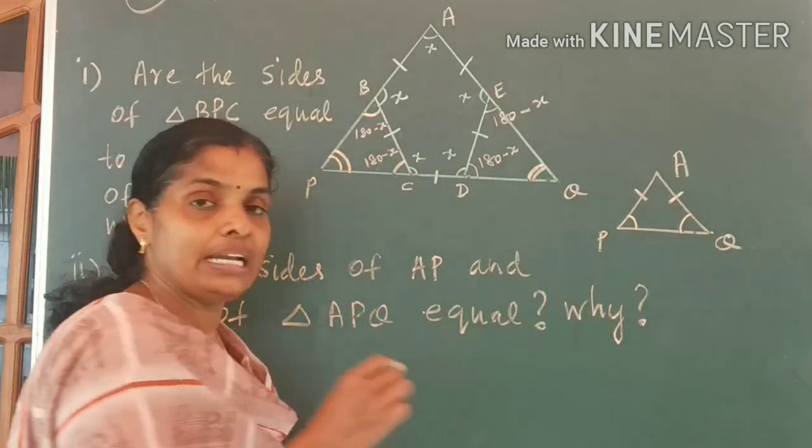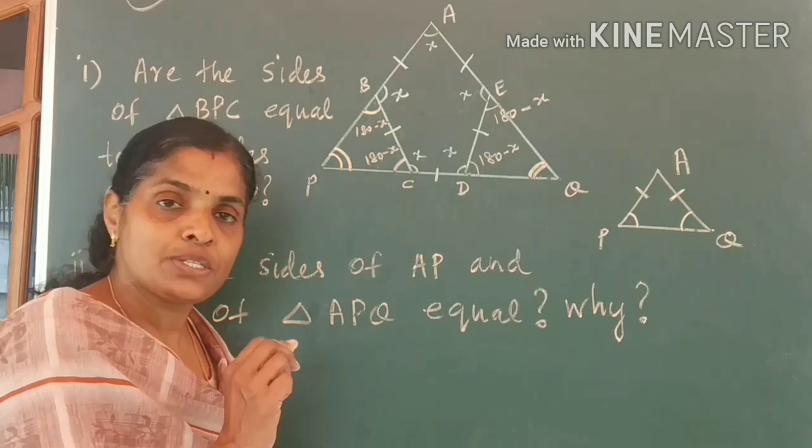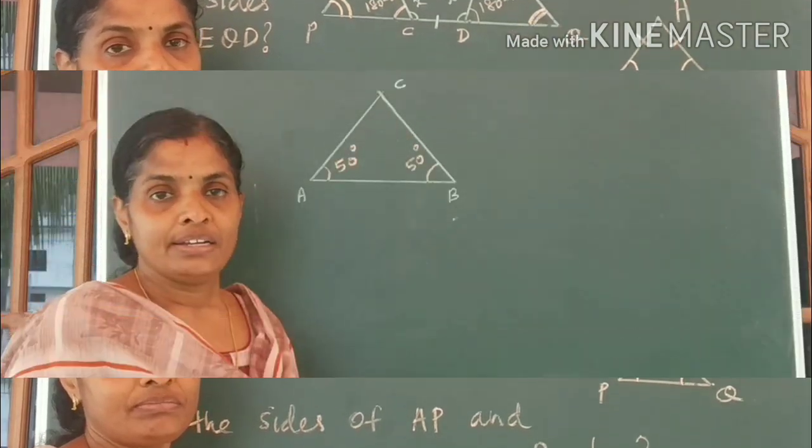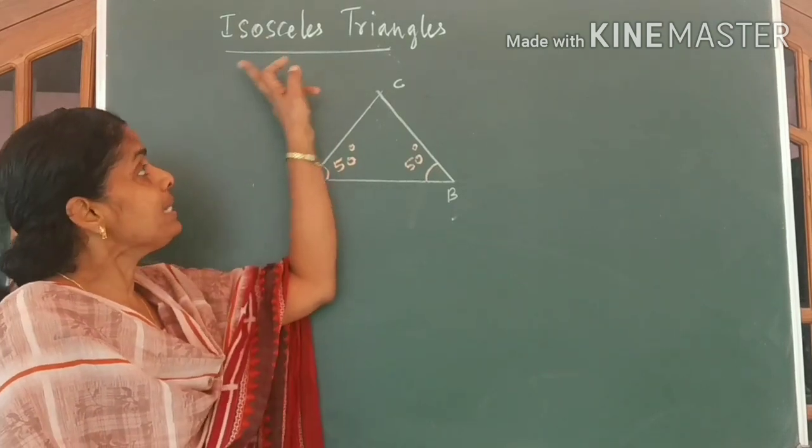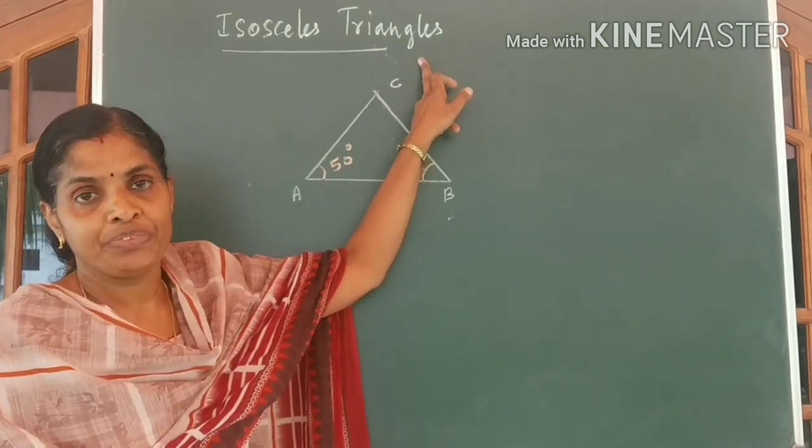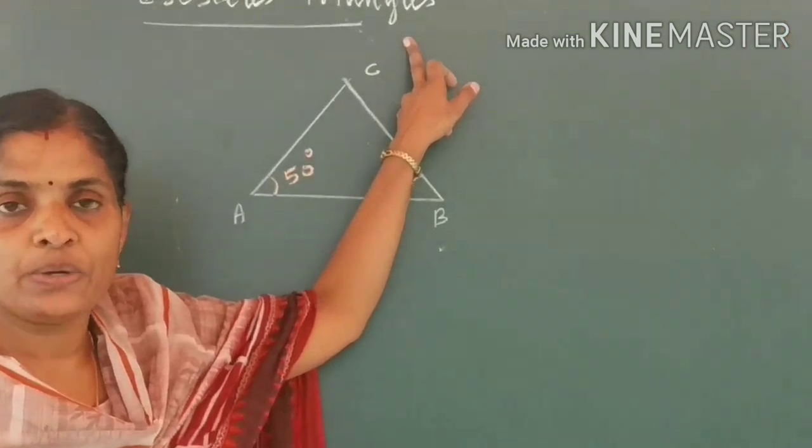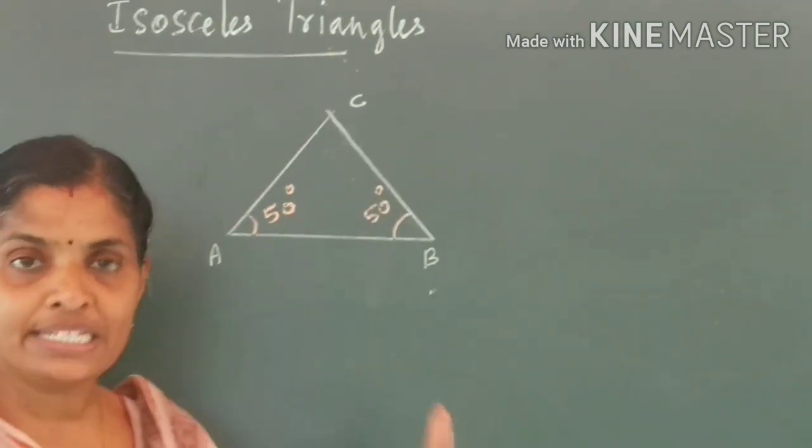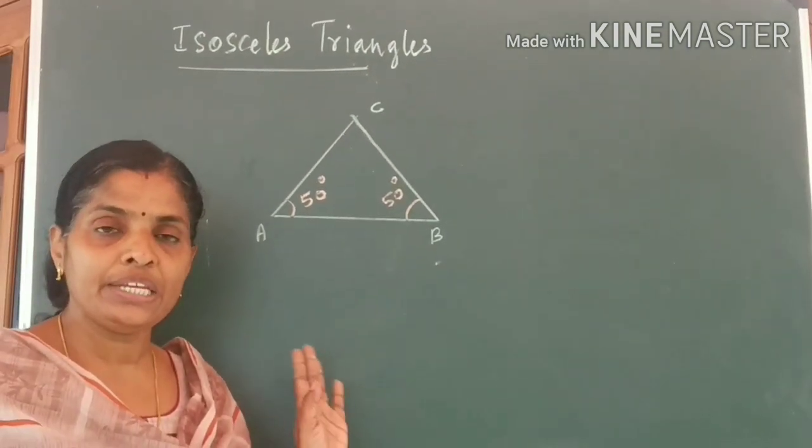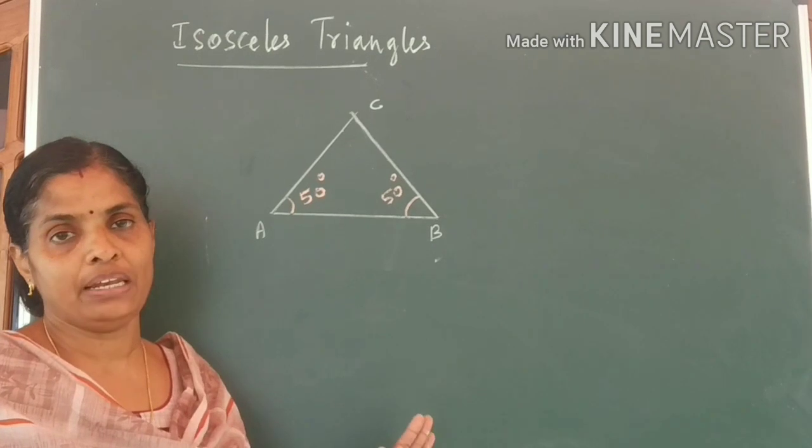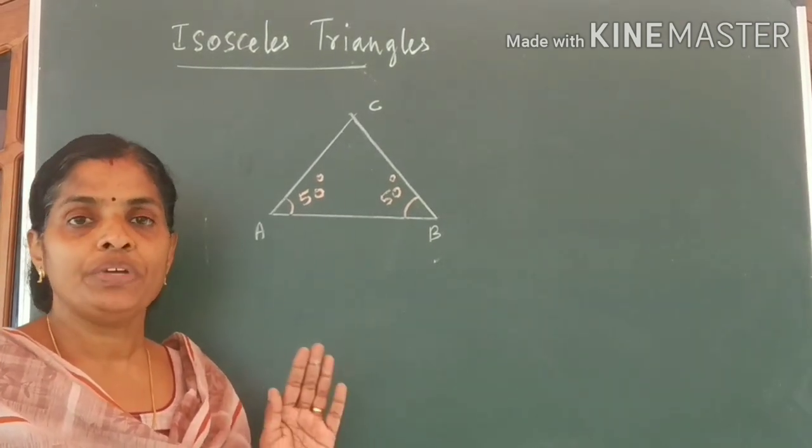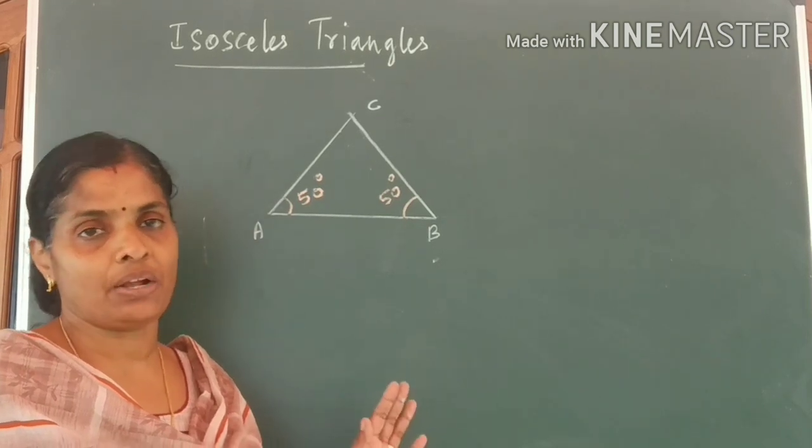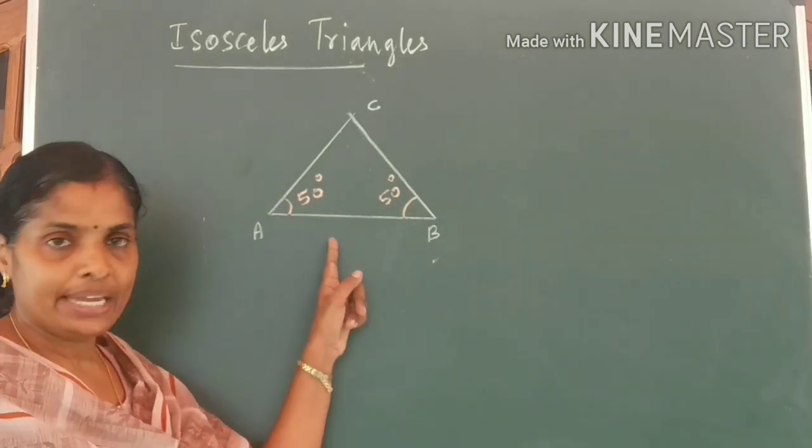Such a triangle is called as an isosceles triangle. Children, I will give you an idea about isosceles triangles. What do you mean by an isosceles triangle? A triangle with any two angles equal. Or, you can say a triangle with any two sides equal. Look at the figure.